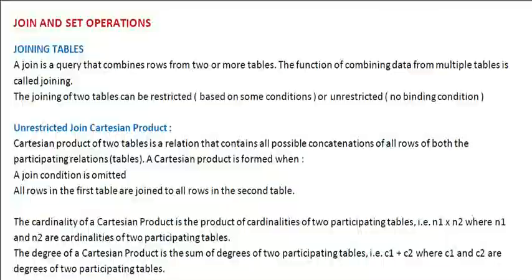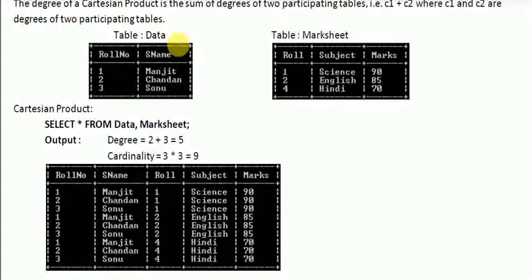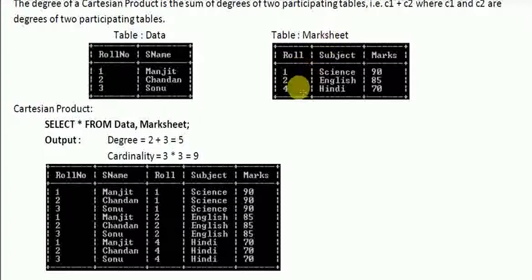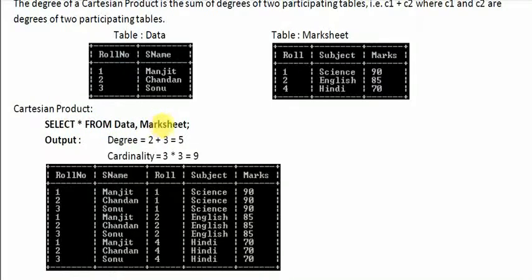Now let's see an example. Here the table 'data' has three rows and 'marksheet' also has three rows. The SQL statement for the Cartesian product is: SELECT * FROM data, marksheet. As you can see, there is no WHERE clause — no join condition.